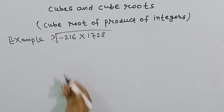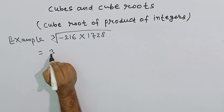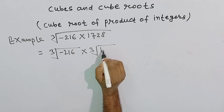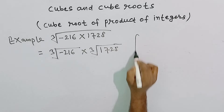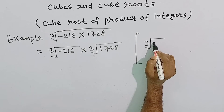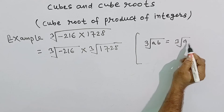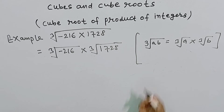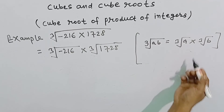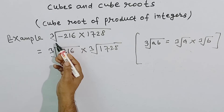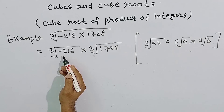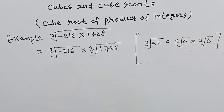चलिए अब हमारे पास और एक example है: minus 216 into 1728 इसका हमें cube root निकालना है। So is equal to हम लिख सकते हैं cube root of minus 216 into cube root of 1728, क्योंकि cube root of a into b is equal to cube root of a into cube root of b होता है for any two integers a and b।